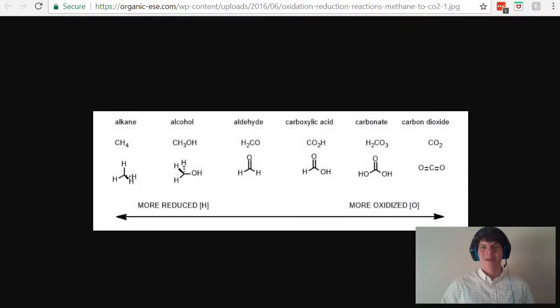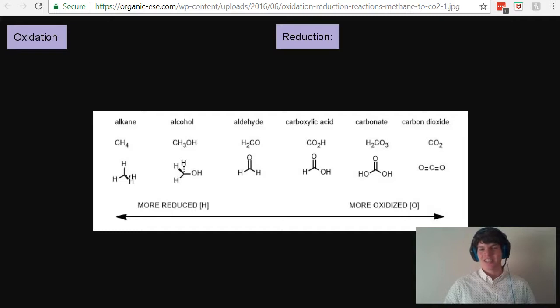For the MCAT, I believe it's very important to be familiar with this progression from an alkane to a carbon dioxide in terms of reduction and oxidation. The traditional way to think about oxidation versus reduction is that reduction is a gain of electrons and oxidation is a loss of electrons, as you'd remember using the acronym OIL RIG. Oxidation is loss, reduction is gain.